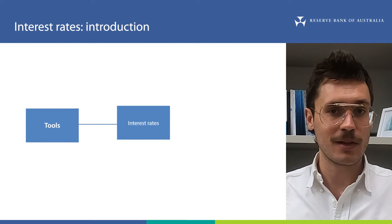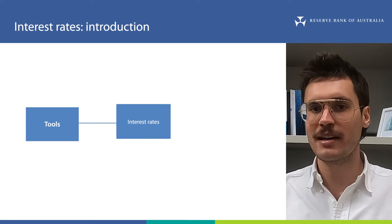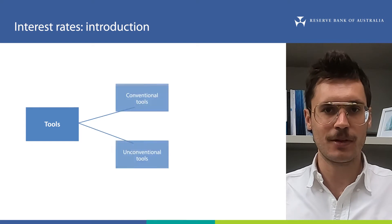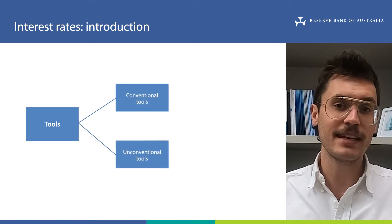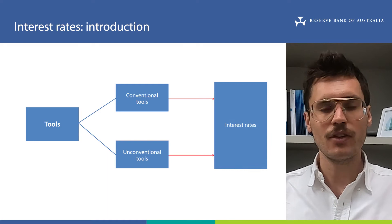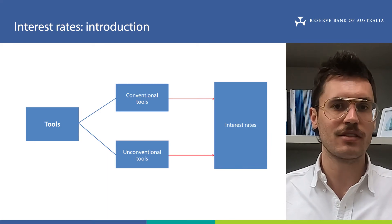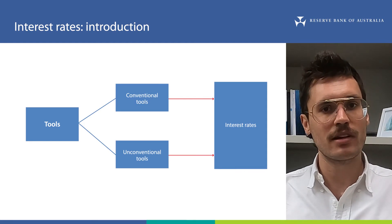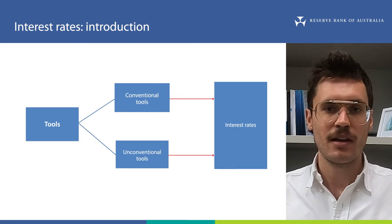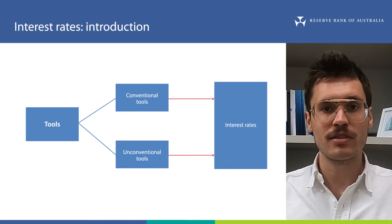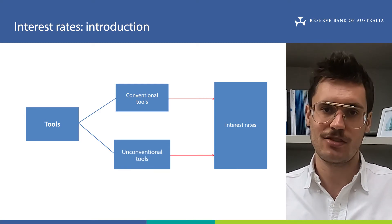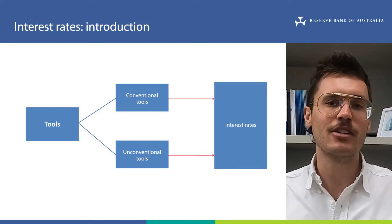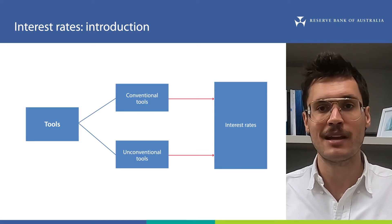So before we talk about monetary policy tools, first we need to learn about interest rates. Then we'll talk about the different monetary policy tools that the RBA uses to influence interest rates. First, we cover the cash rate target, which for the past 30 years or so has been the main tool used by the RBA. For this reason, we call it a conventional tool. Other videos cover other tools, sometimes referred to as unconventional tools. These were introduced in Australia in March 2020, in response to the economic effects of the COVID-19 pandemic.